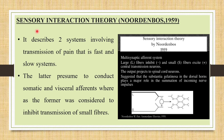The next theory is the sensory interaction theory, put forward by Newton-Box in 1959. It describes two systems involved in pain transmission: the fast system and the slow system. The slow system was presumed to conduct somatic and visceral effects, whereas the fast system was considered to inhibit transmission from the small fibers. He put forward these two fiber systems — the fast fiber and the slow fiber system.